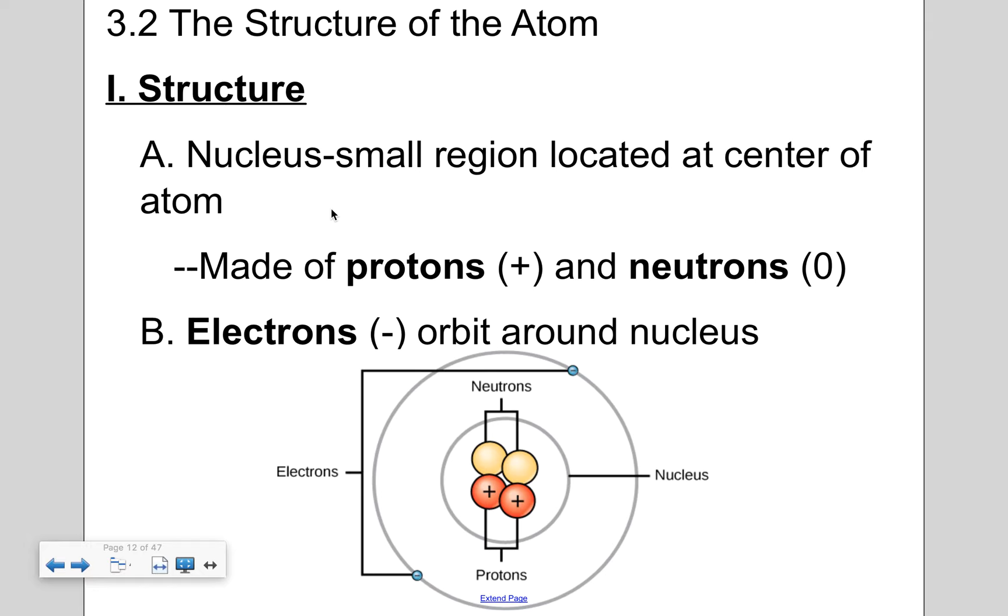So the structure of an atom: it has a nucleus and inside the nucleus you have neutrons and protons. Protons carry a positive charge, neutrons carry a neutral charge or no charge at all. Outside the nucleus, we have subatomic particles that orbit it and they have a negative charge and these are called electrons.